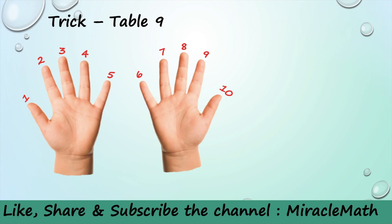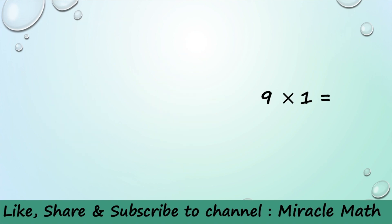Let's put our hands in front of us like these. Your fingers represent the numbers 1 to 10. 1 is your left thumb and 10 is your right thumb as shown on the screen. So are you ready to get 9 times table?